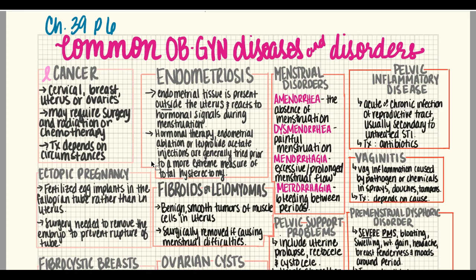Pelvic inflammatory disease (PID) is an acute or chronic infection of the reproductive tract, usually secondary to an untreated sexually transmitted infection. Treatment is typically antibiotics. Vaginitis is vaginal inflammation caused by a pathogen or by chemicals found in sprays, douches, or tampons. Treatment depends on the cause — if caused by sprays or douches, those will be advised to be discontinued.